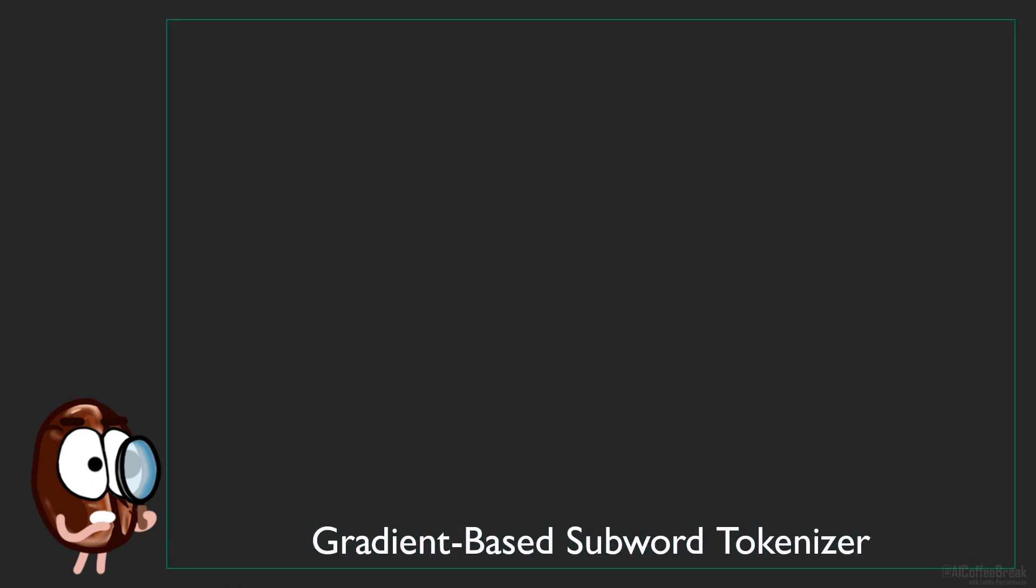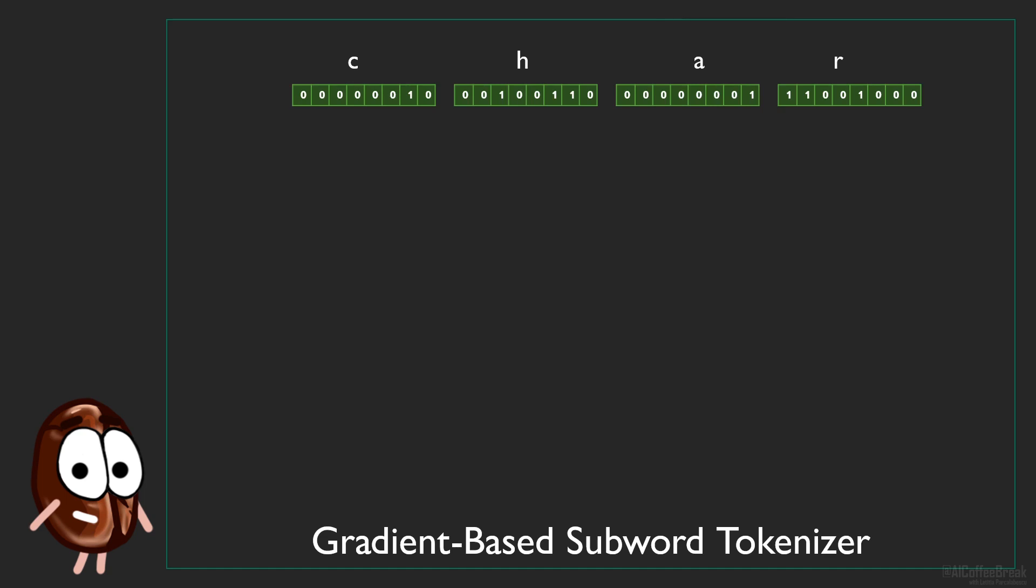Every time the authors say character, they mean byte, because this is how they encode each character, allowing them to work with many languages, where all language characters are all encoded in this byte space. So the idea is to have your input, which is a sequence of L characters, each encoded by d-dimensional vectors, here 8-dimensional bytes. And the goal with this learned tokenization, called gradient-based subword tokenization, or short, GBST,